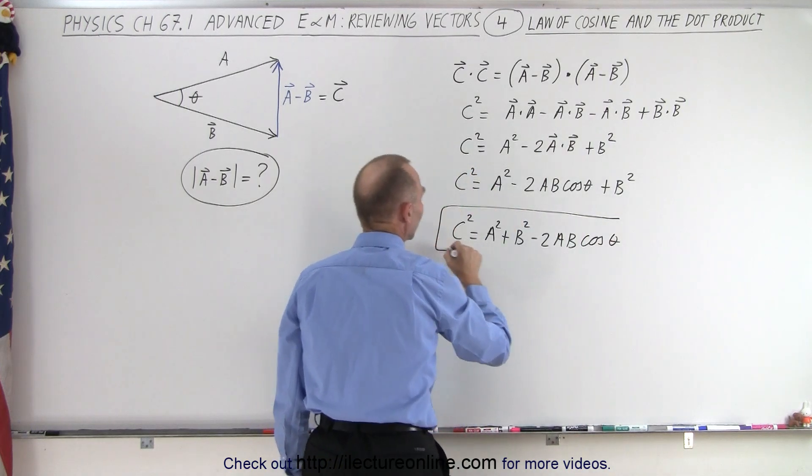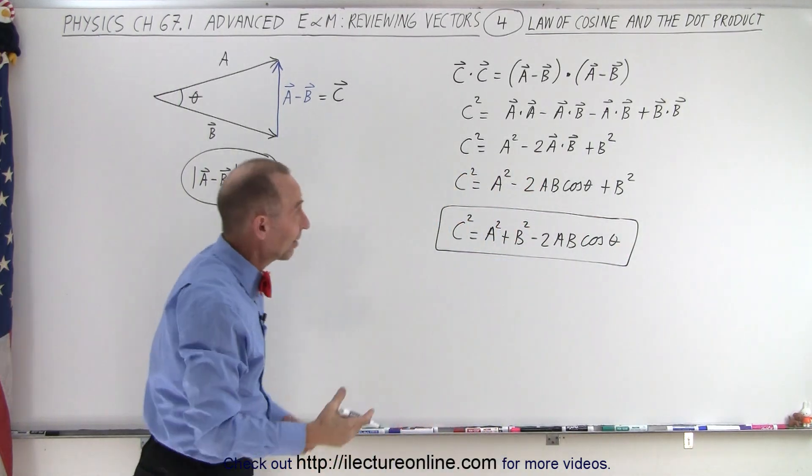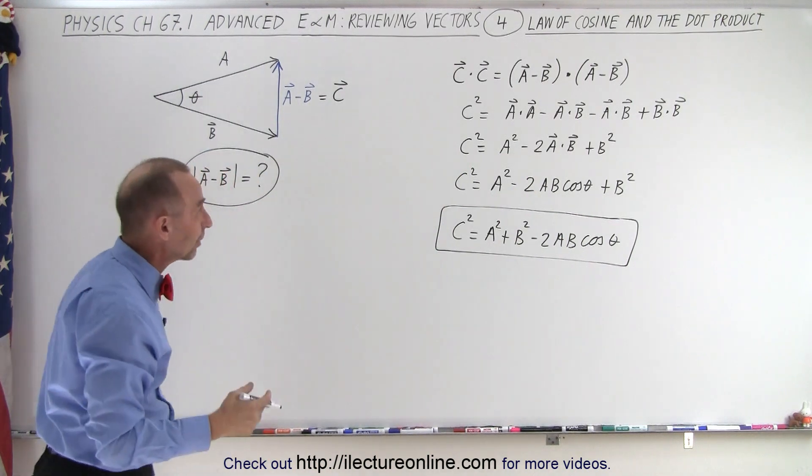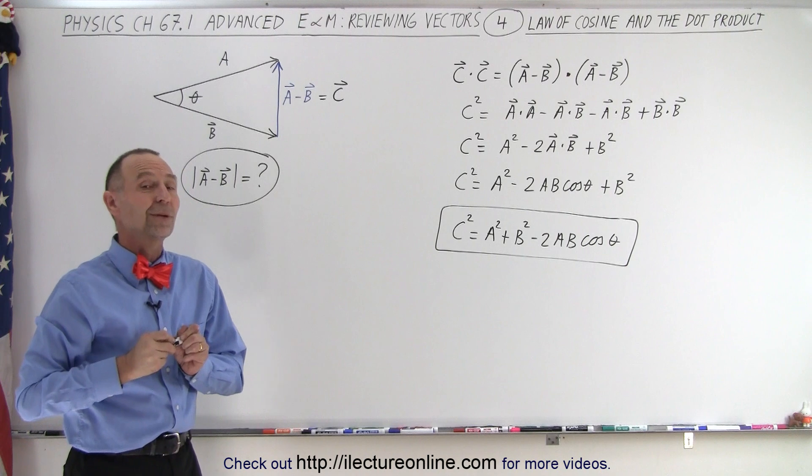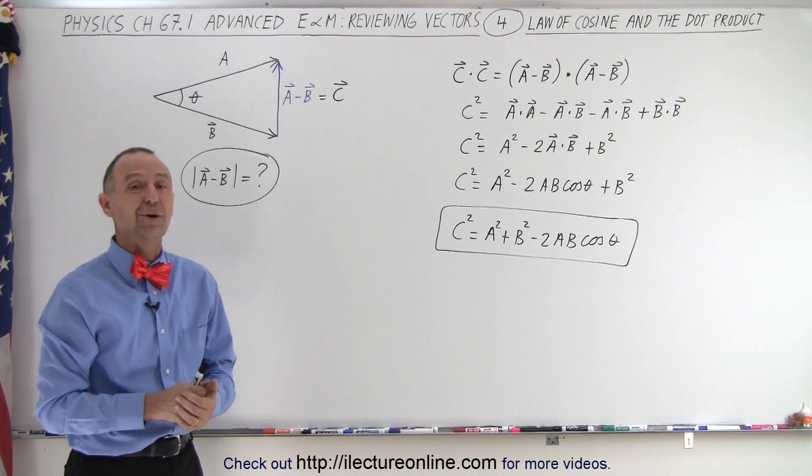And that, of course, is the law of cosine. And notice the law of cosine simply comes right out of using the dot product on those two vectors. And that's what the relationship is between the dot product and the law of cosine.